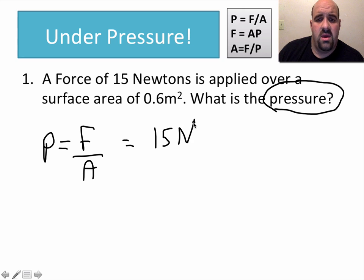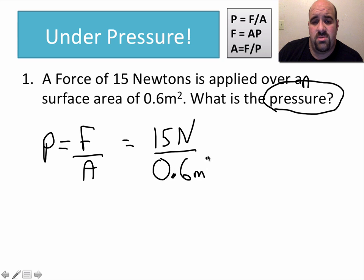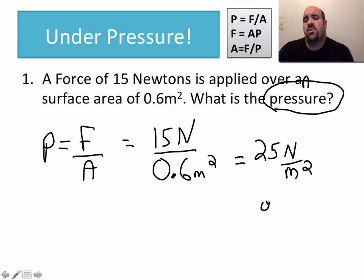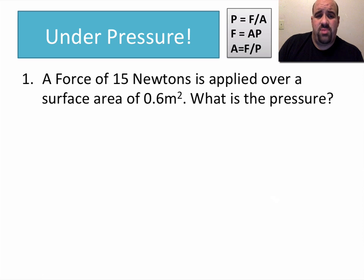And this problem is really simple. It says a force of 15 newtons is applied over a surface area of 0.6 meters squared. So the area is 0.6 meters squared. We just divide 15 divided by 0.6, and that's going to equal 25 newtons per meter squared, or you could write that as PA because a Pascal is a newton per meter squared. Both are acceptable units for pressure. So pressure, force divided by area. Just plug and chug.